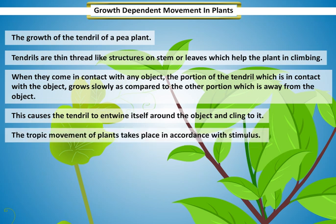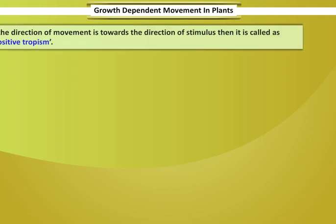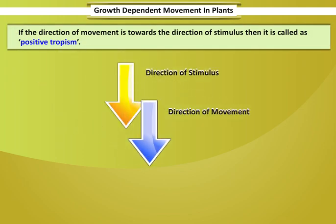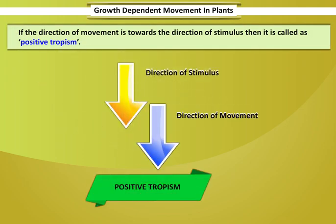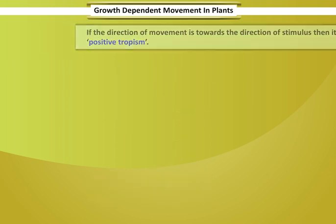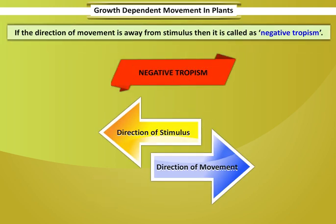The tropic movement of plants takes place in accordance with the stimulus. If the direction of movement is towards the direction of stimulus, then it is called positive tropism. If the direction of movement is away from the stimulus, then it is called negative tropism.